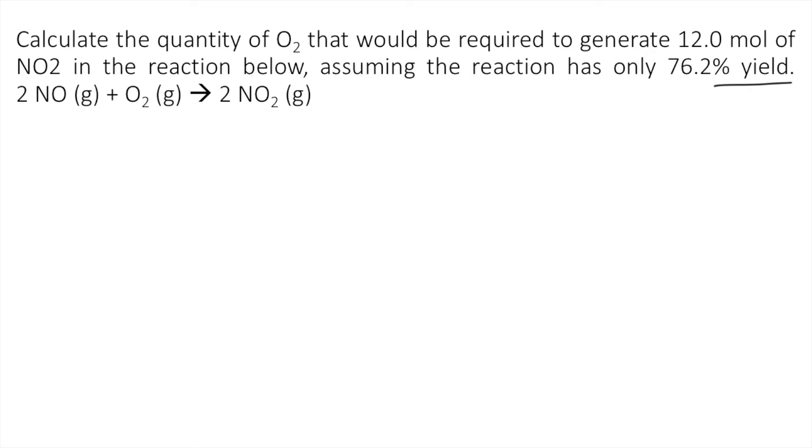percent yield is equal to actual yield divided by the theoretical yield times 100.